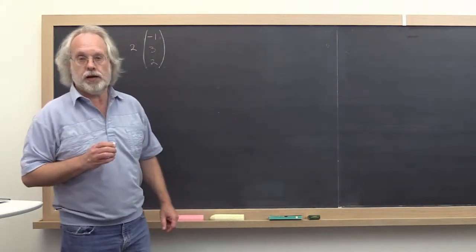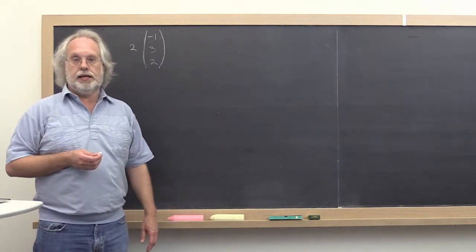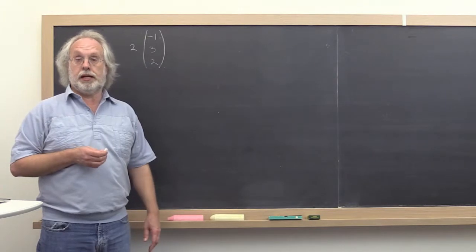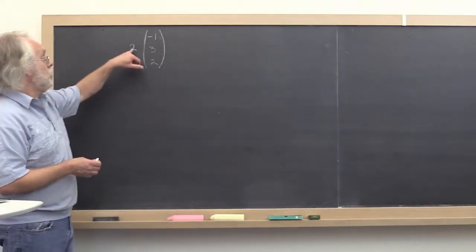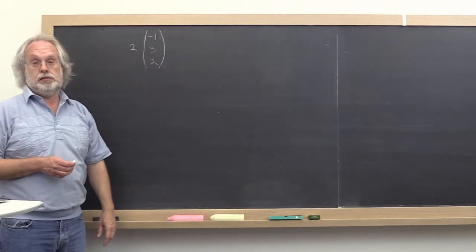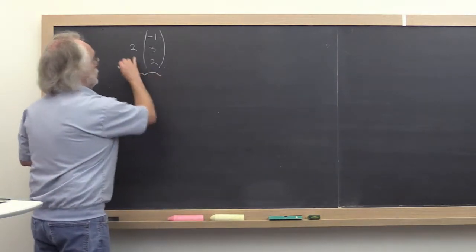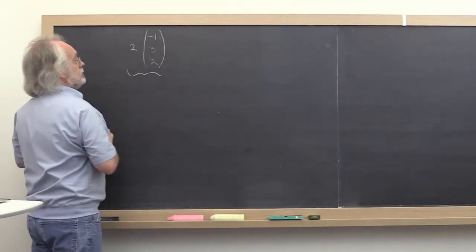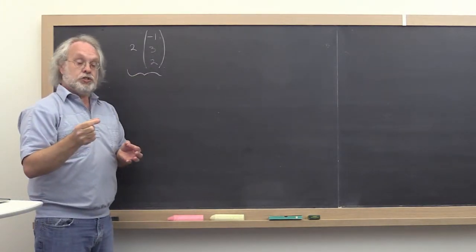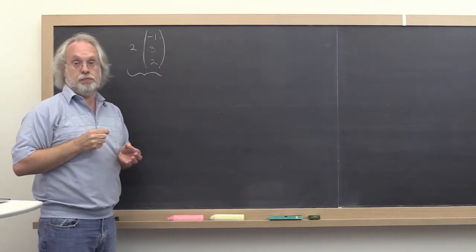Somewhere in your linear algebra upbringing, you were exposed to the dot product. And somewhere in that same upbringing, you were exposed to the scaling of a vector by a scalar. And how did that work? If you want to do a scalar times a vector, then that really is you're stretching the vector by that much in the direction that the vector points.